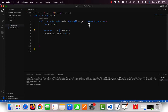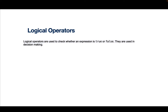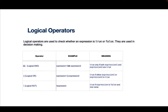Let's talk about logical operators. Logical operators are used to check whether an expression is true or false — they are basically used for decision making. There are three major types: AND, OR, and NOT. NOT is technically a unary operator but is included in logical operators because it always gives a result in a true or false variant.